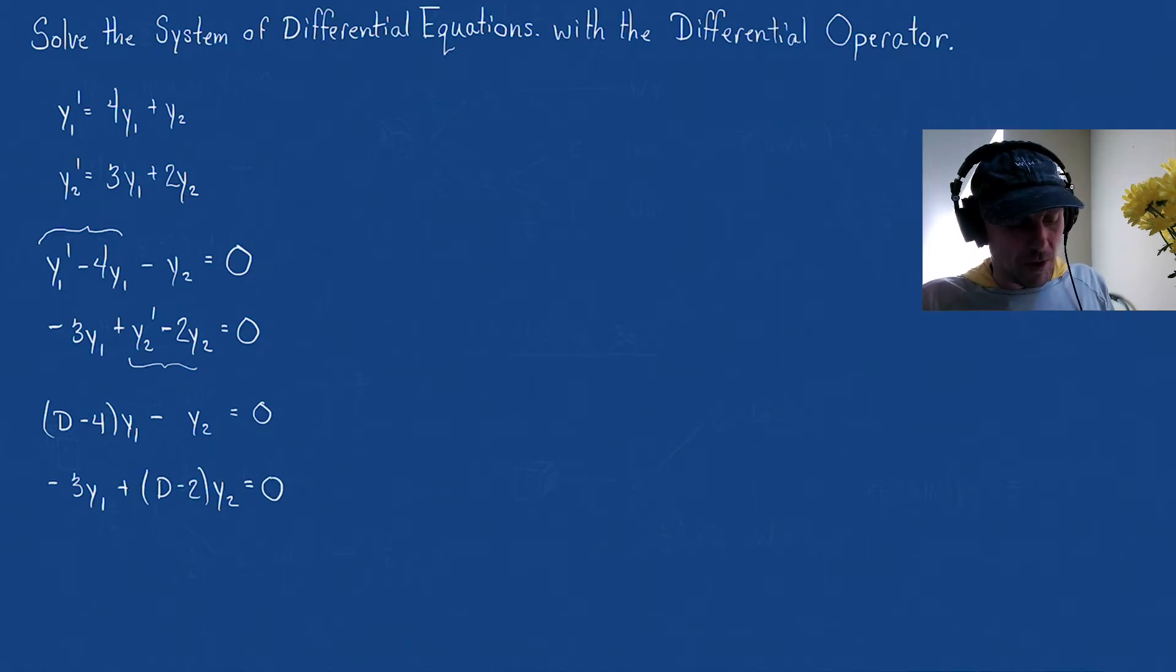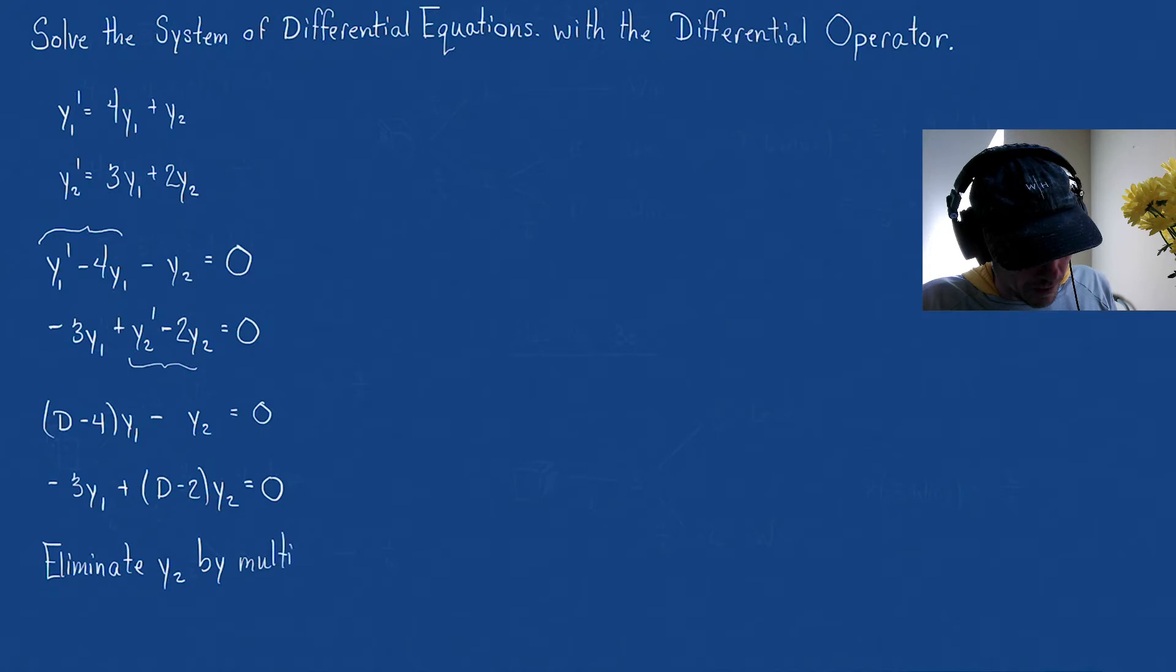Now, we could solve for either y1 or y2. I'm going to start by finding y1. So what I'm going to do is eliminate y2. And I think all I have to do is eliminate y2 by multiplying by (D - 2). Alright, so let's do that.